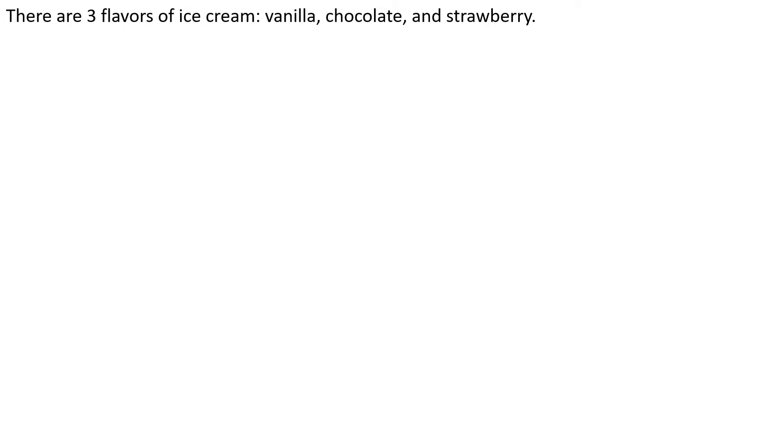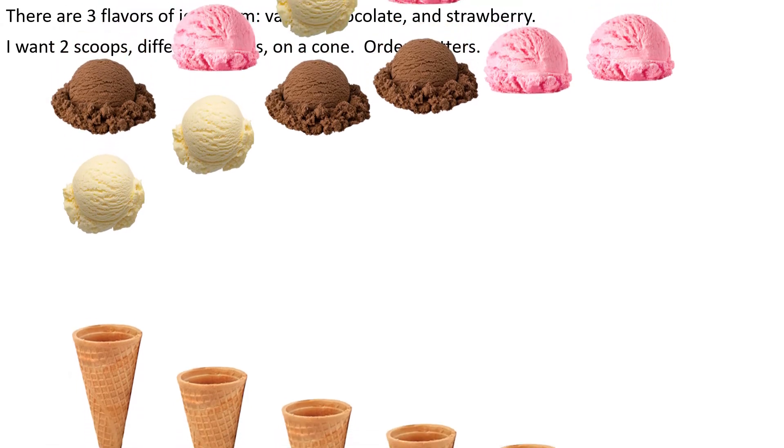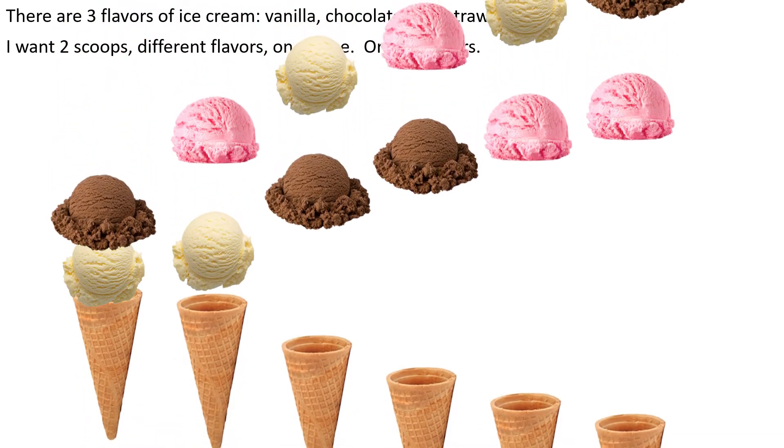Okay, so let's pretend there's three flavors of ice cream: vanilla, chocolate, strawberry. And I want two scoops on a cone. They have to be different flavors. Of course, the order matters because whatever flavor is on top, that's the one that I'm going to start eating first.